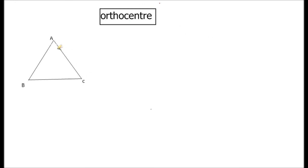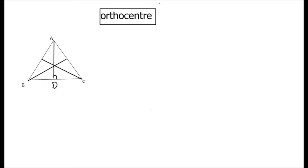Orthocenter is the point of intersection of altitudes. From each vertex we drop a perpendicular to the opposite side — AD is perpendicular to BC, BE is perpendicular to AC, and CF is perpendicular to AB. All three altitudes intersect at a single point O, called the orthocenter. This intersection is a point of concurrency.